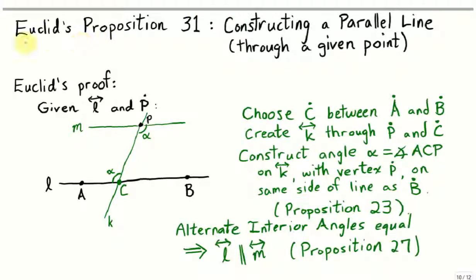This is a proof from Euclid's Elements, Book 1, Proposition 31. This is actually a construction, construction of a parallel line to a given line through a given point.